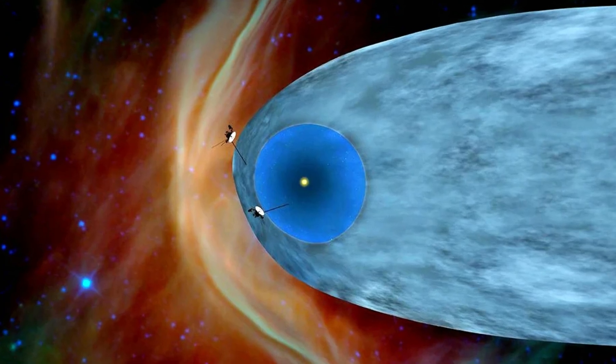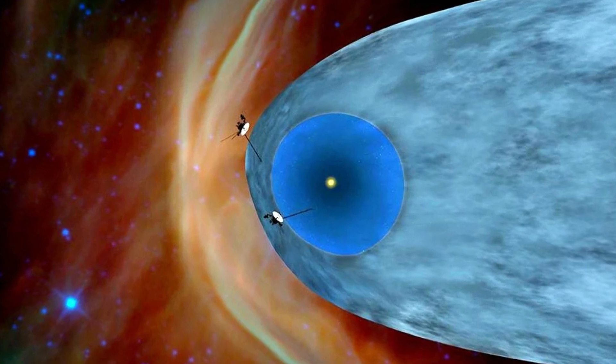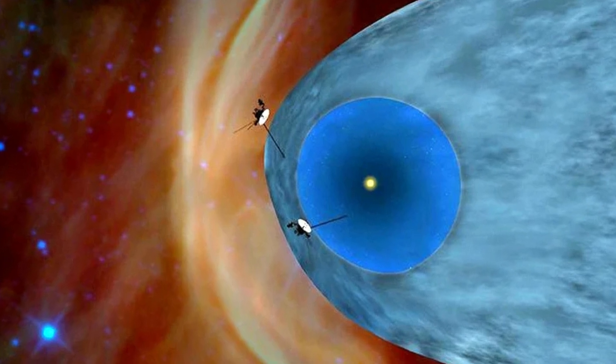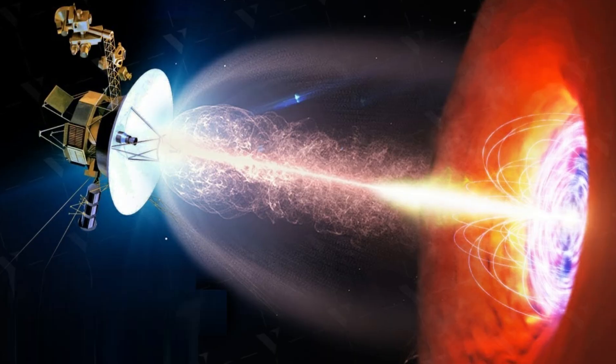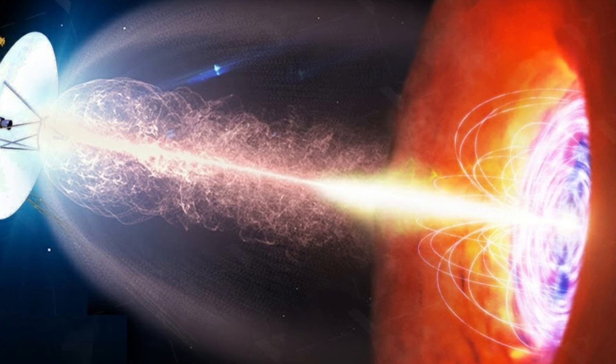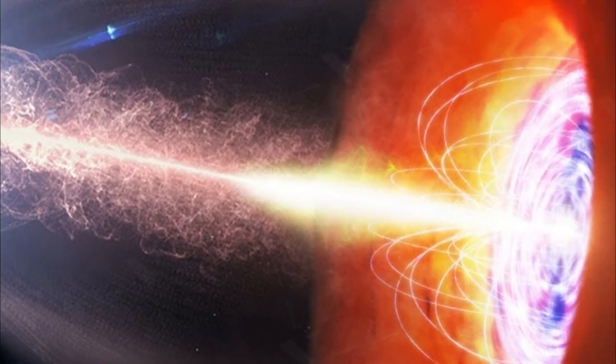This extreme thermal phenomenon occurs at the heliopause, the boundary where the Sun's influence wanes and interstellar space begins. The heliopause marks the outer edge of the heliosphere, the vast, bubble-like region of space dominated by our Sun's magnetic field and filled with charged particles streaming outward as solar wind.